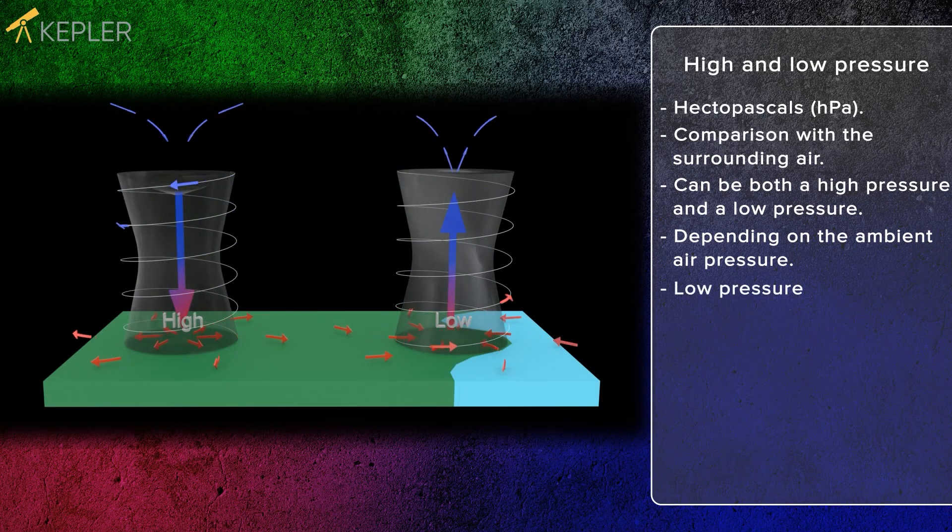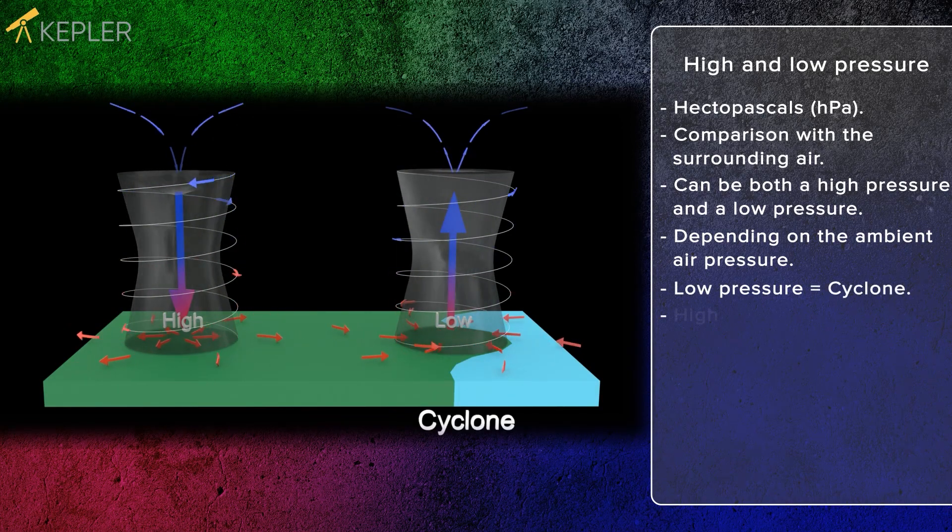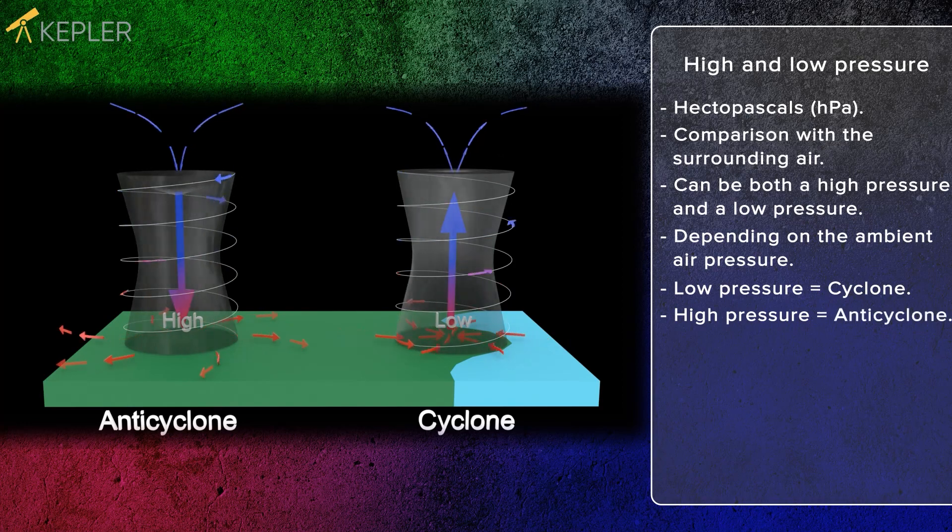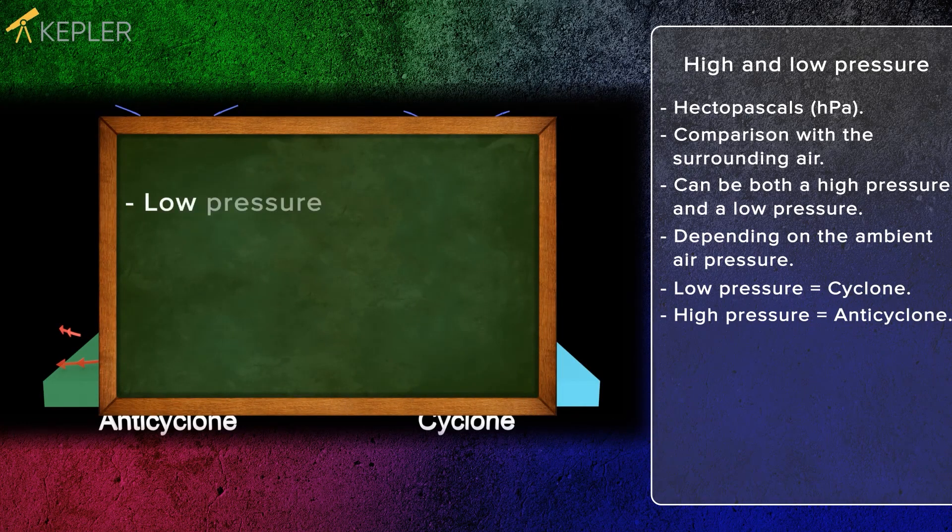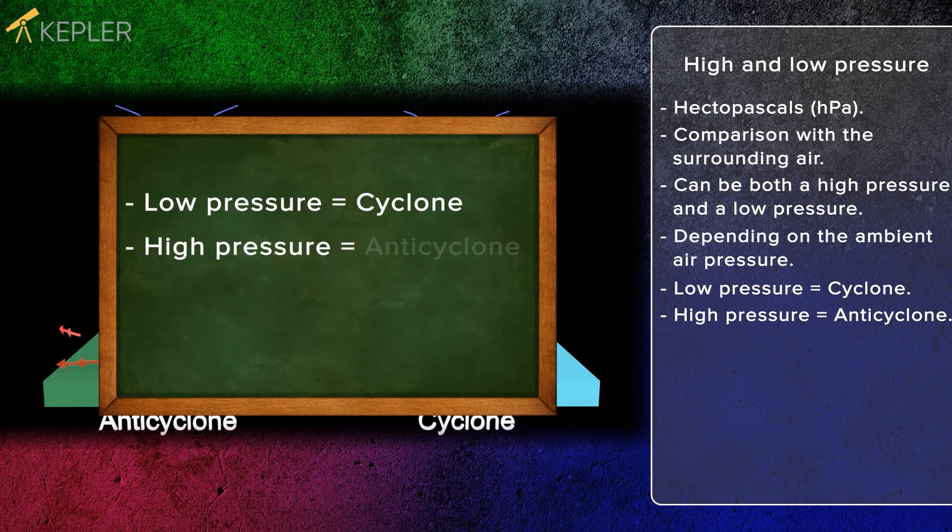A low pressure is called a cyclone and a high pressure is called an anticyclone. Low pressure equals cyclone. High pressure equals anticyclone.